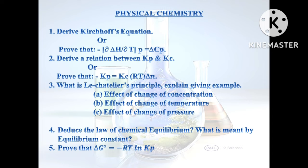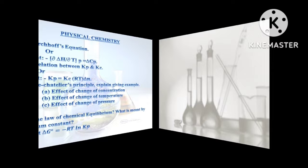Question number 4: Deduce the law of chemical equilibrium. What do you mean by equilibrium constant? Question number 5: Prove that ΔG° = -RT ln Kp.